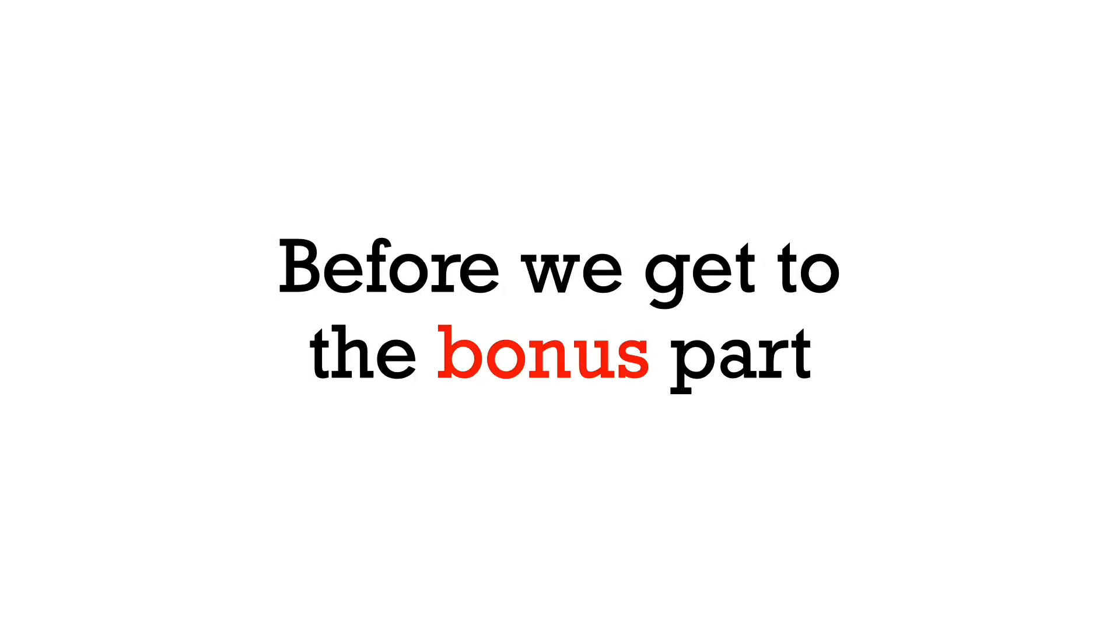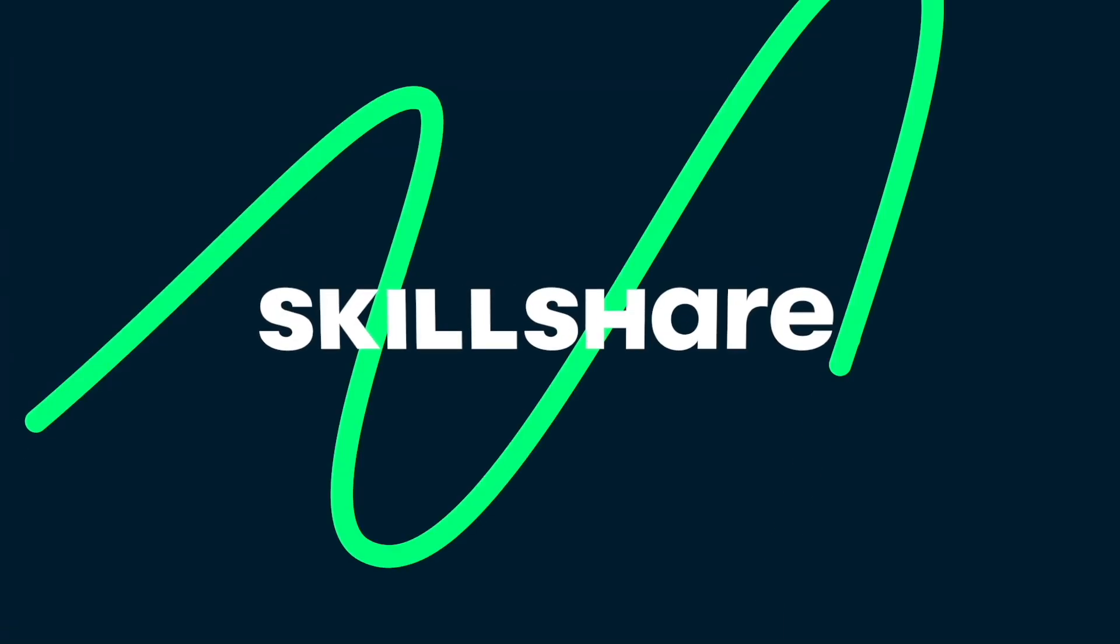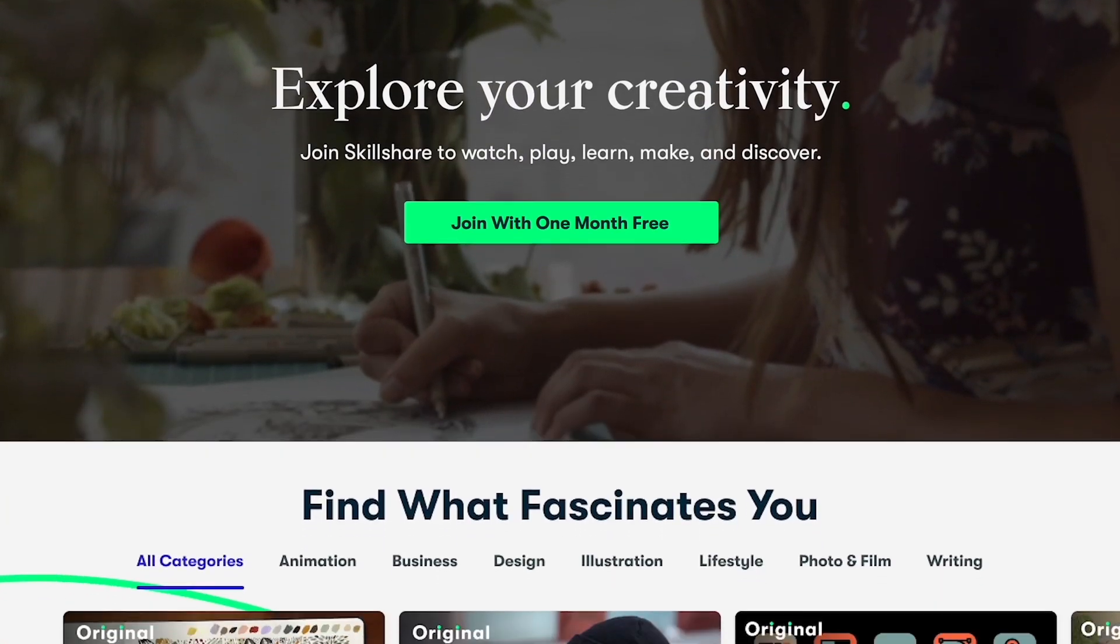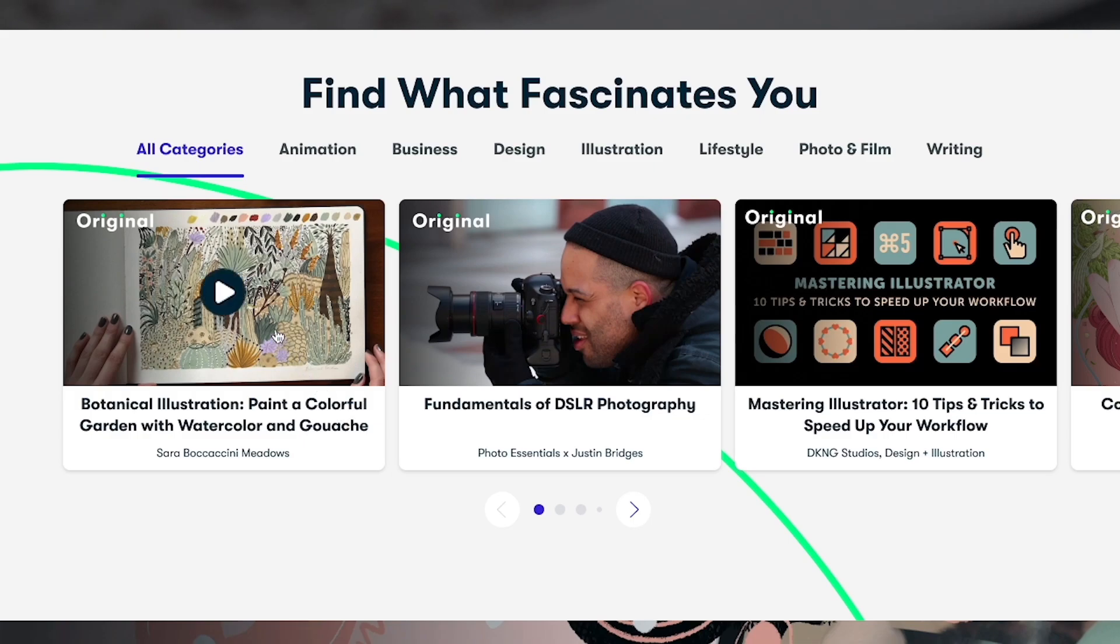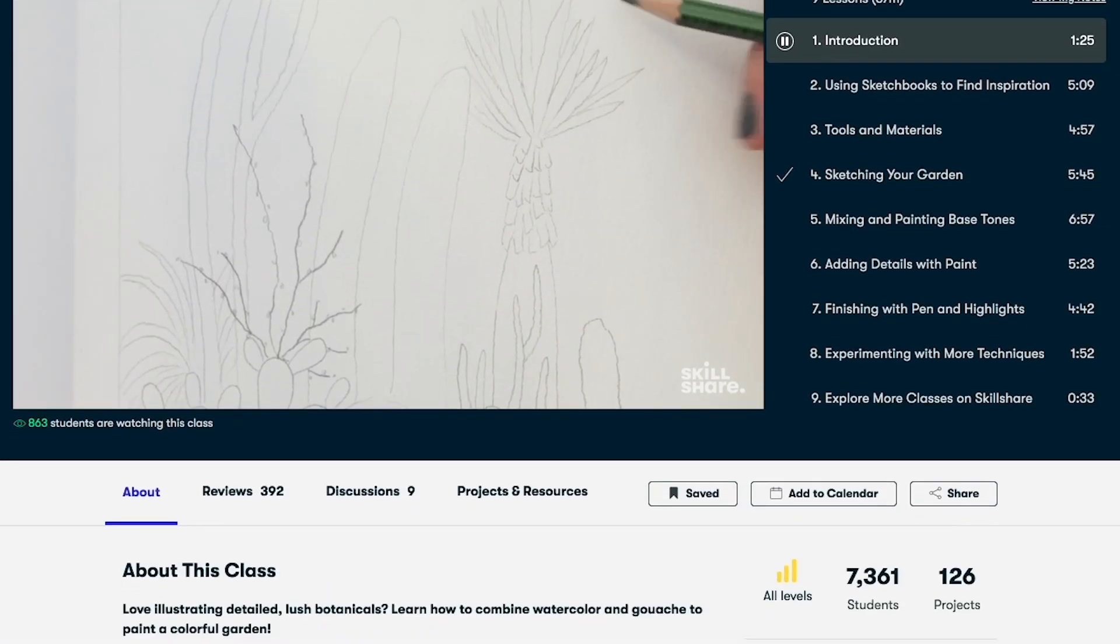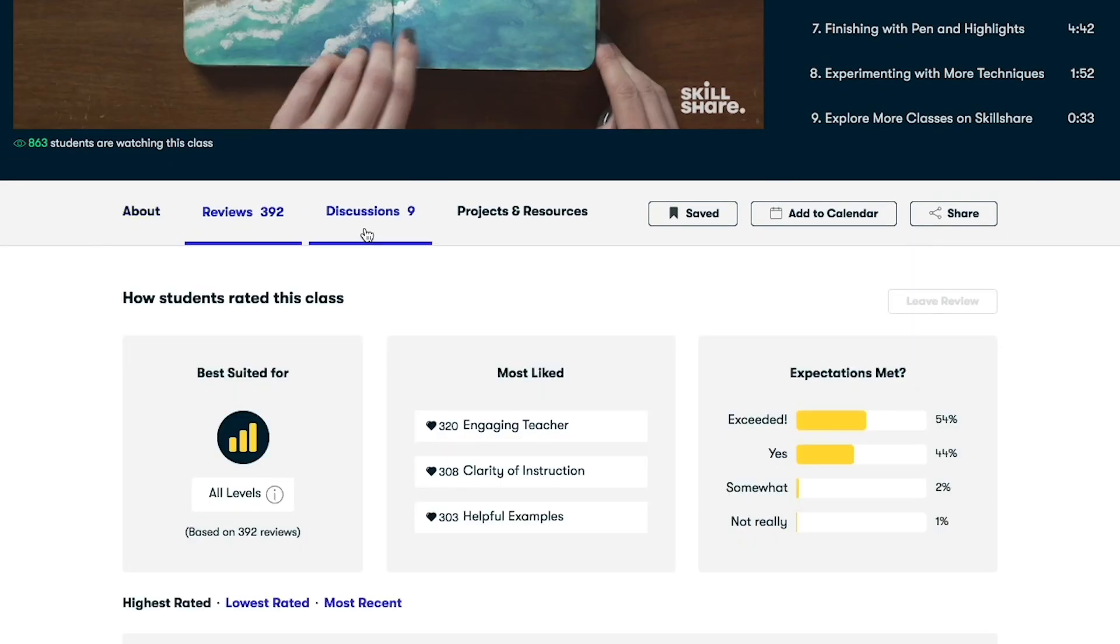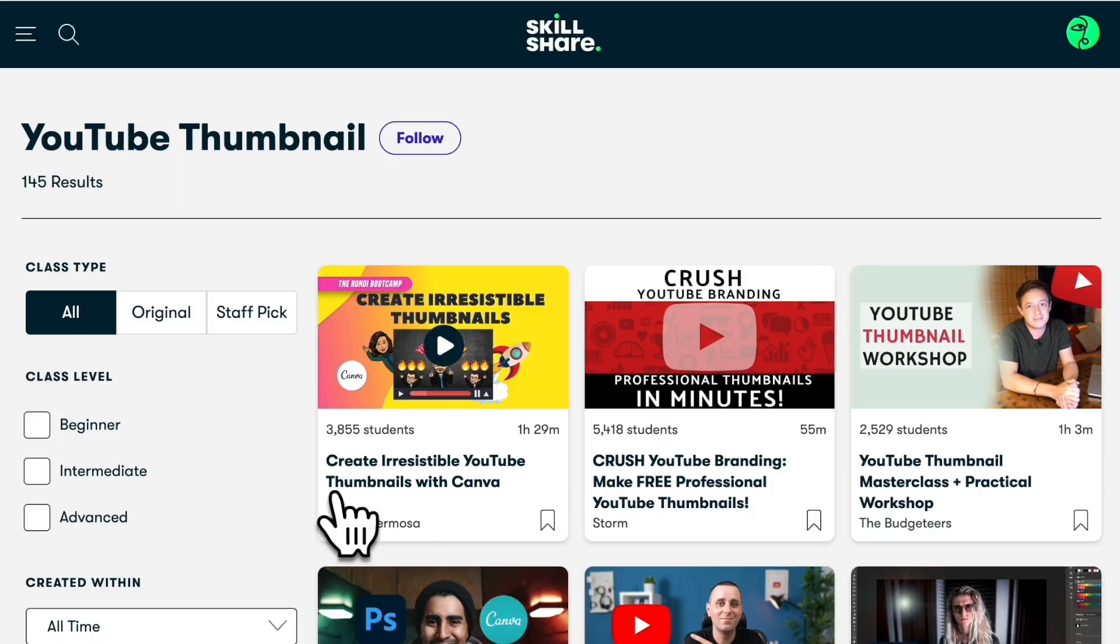Before we get to the bonus part, I would like to tell you about our sponsor today, Skillshare. Skillshare is an online learning community with thousands of online classes and members across 150 countries, and we all come together to find inspiration and take the next step in our creative journeys. I have been a member of Skillshare for a while now, and I really like their YouTube-related classes. One class that I finished a while ago that has really benefited me a lot is called Create Irresistible YouTube Thumbnails with Canva by Ronnie Hermosa.